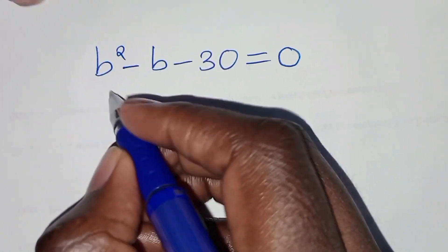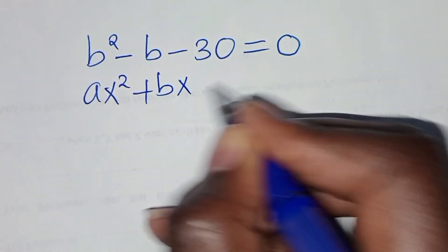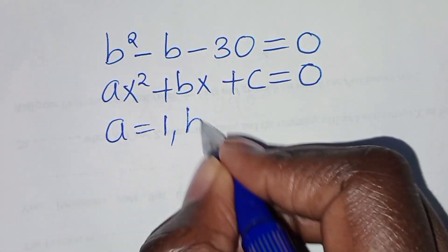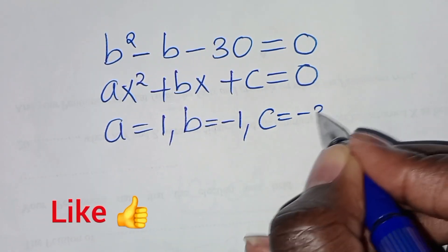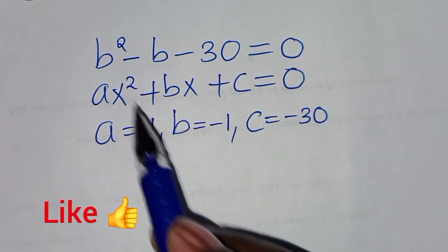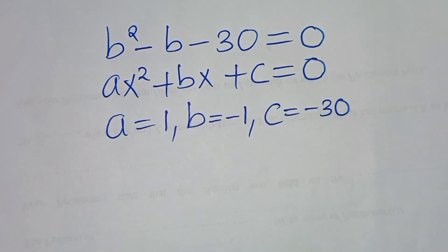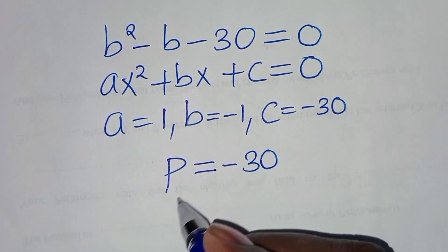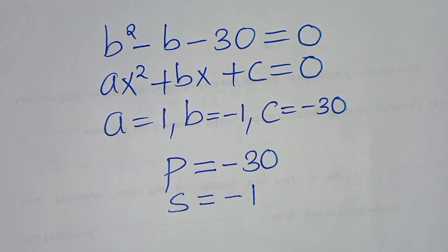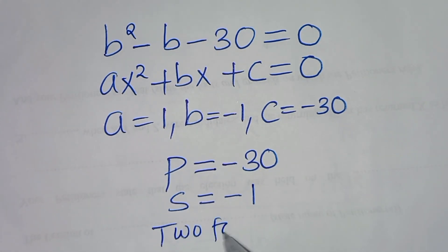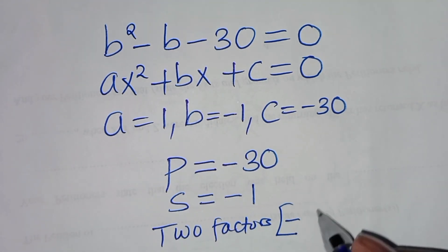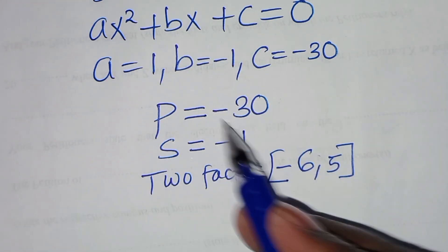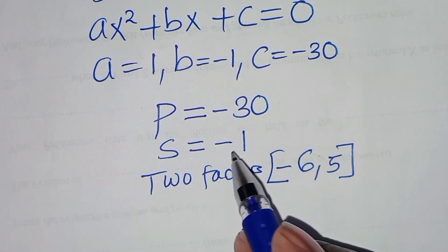This is a quadratic equation of the form ax² + bx + c = 0, where b = minus 1 and c = minus 30. We can solve by the factorization method — we identify two numbers whose product equals minus 30 and whose sum equals minus 1. Those two factors are minus 6 and 5, since minus 6 times 5 = minus 30 and minus 6 plus 5 = minus 1.